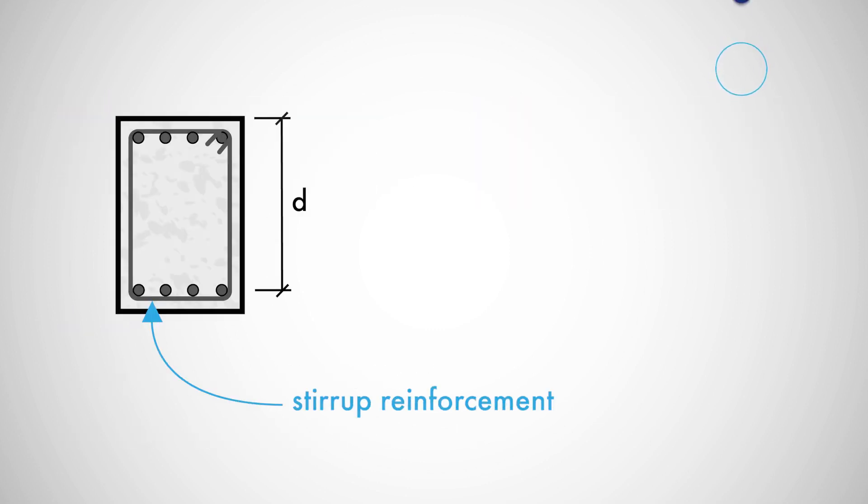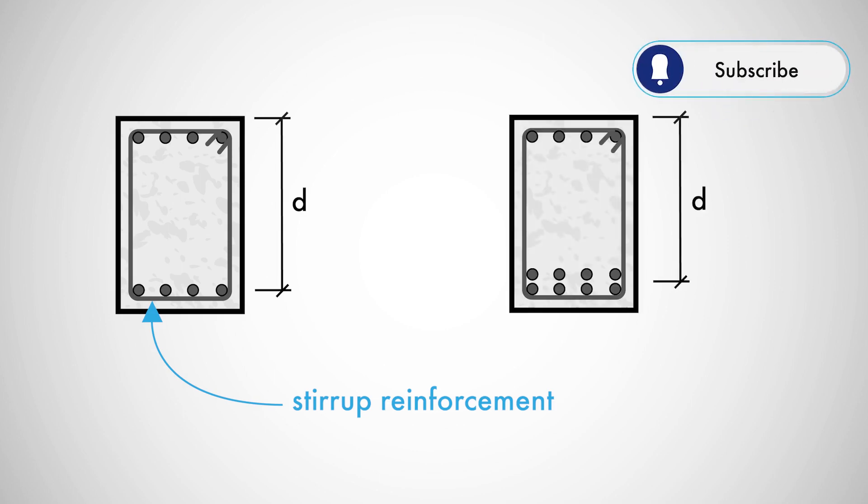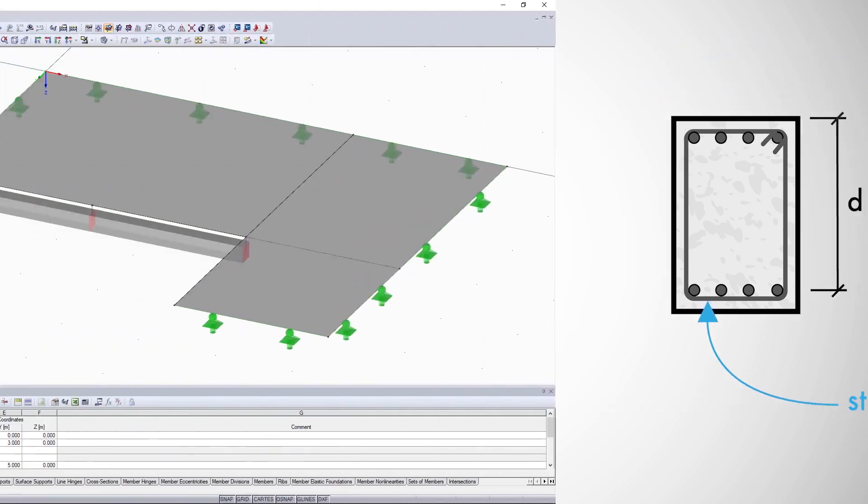In the case of beams you have to pay attention to the stirrup reinforcement and if you have several layers of tension members you have to adjust the center of gravity of the tension reinforcements.